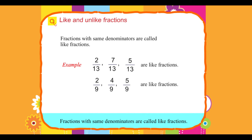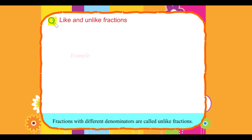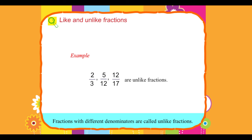Fractions with different denominators are called unlike fractions. For example, 2 upon 3, 5 upon 12, and 12 upon 17 are unlike fractions.